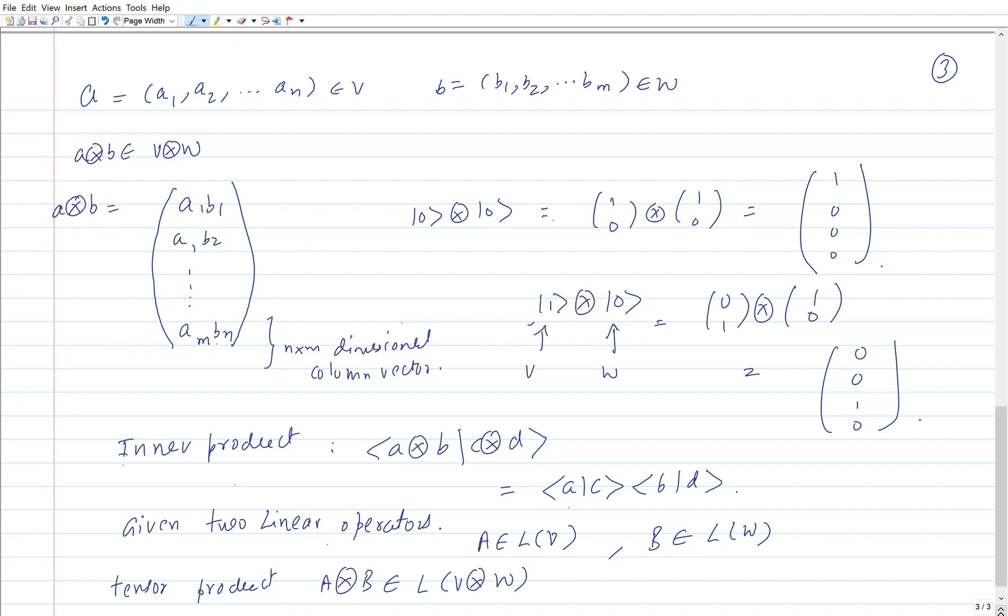The action of A tensor B, the operator on a given vector in V tensor W, is specified by simply A tensor B where I am using A analogously and B in the bracket notation. And in general, any operator of the form